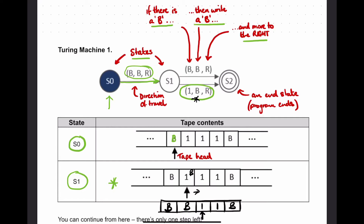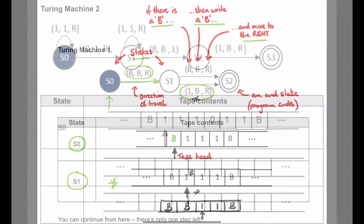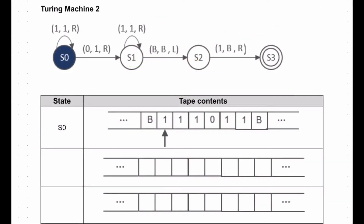Our final solution is B B 1 1 B. This is a slightly more complicated looking example, but you just follow the same rules. The tape shows B, then 0 1 1, then B. We're in state 0 to begin with. Above in the diagram you can see 4 states: 0, 1, 2, and 3 - state 3 is your terminal state. I'm going to just start and see where the rules take me.